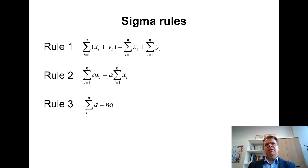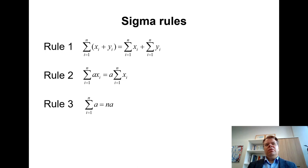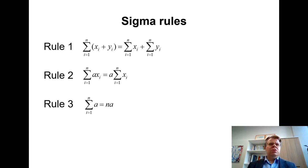The second rule is that if we have a sum of variable X where all elements are multiplied by some constant A, then we can move this constant A outside the sigma operator, giving us A times the sum of Xi. The third rule is that if we sum constant A n times, we can eliminate the sigma operator and simply multiply A by n. So A plus A plus A n times is obviously n times A. When you see these three rules presented this way, they look quite obvious and natural.